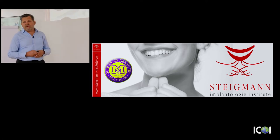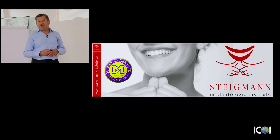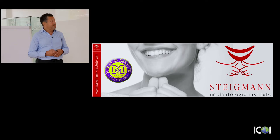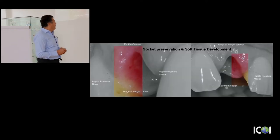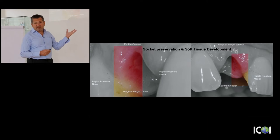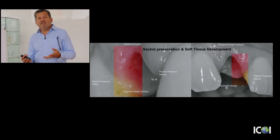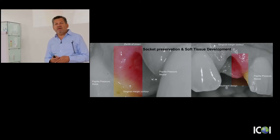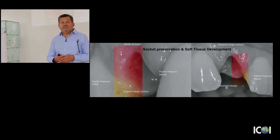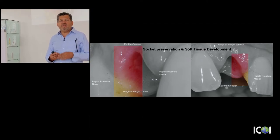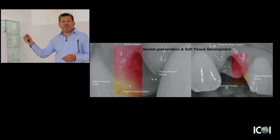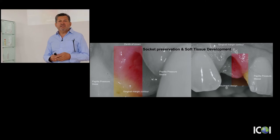At the Steigman Institute we are very keen to give the patient the optimum which they need. When we look at cases where we need very good support for our implants, we have choices. We can place an implant immediately, we can place an implant late, or we can prepare the site with socket preservation. In socket preservation we have to differentiate by site: thick biotype, thin biotype, existing buccal plate, no buccal plate, fenestration of the buccal plate, or different dehiscences at different levels.